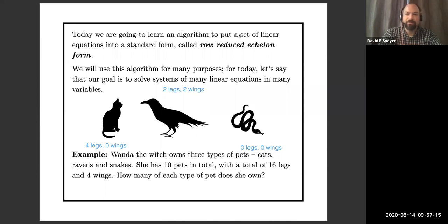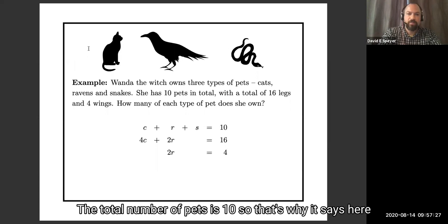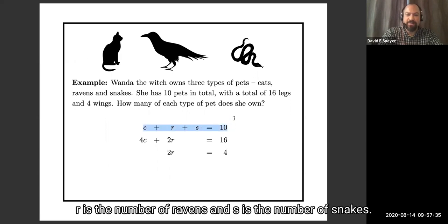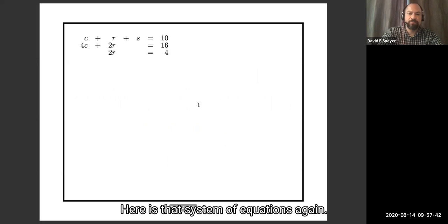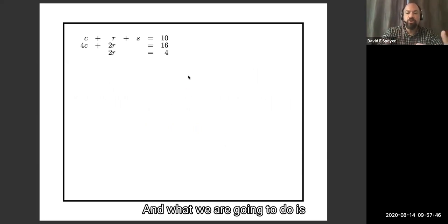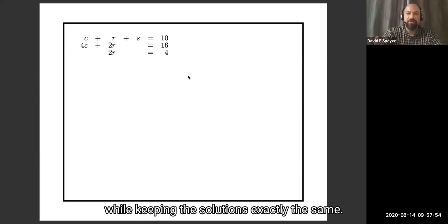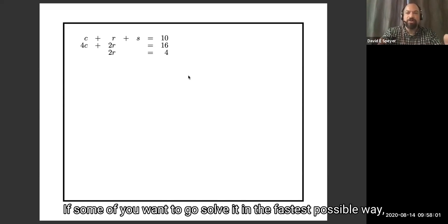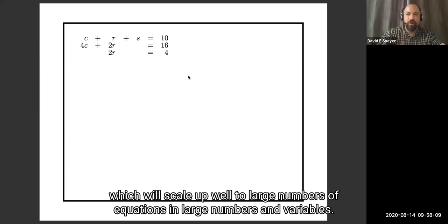Here is the corresponding system of equations. The total number of pets is 10, so c plus r plus s equals 10, where c is the number of cats, r is the number of ravens, and s is the number of snakes. What we are going to do is systematically modify these equations while keeping the solutions exactly the same. I am not trying to solve this in the fastest possible way — I'm showing you a systematic method which will scale up well to large numbers of equations and variables.